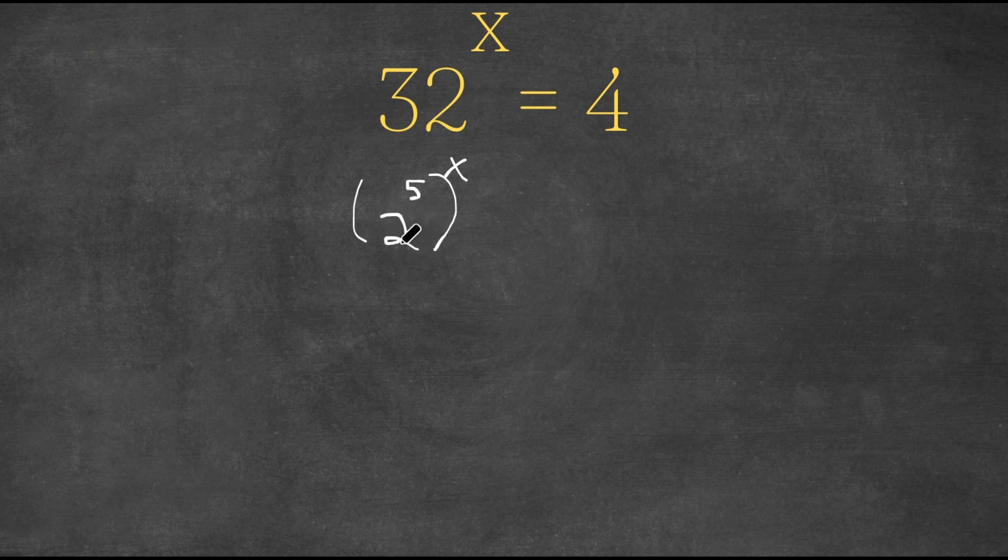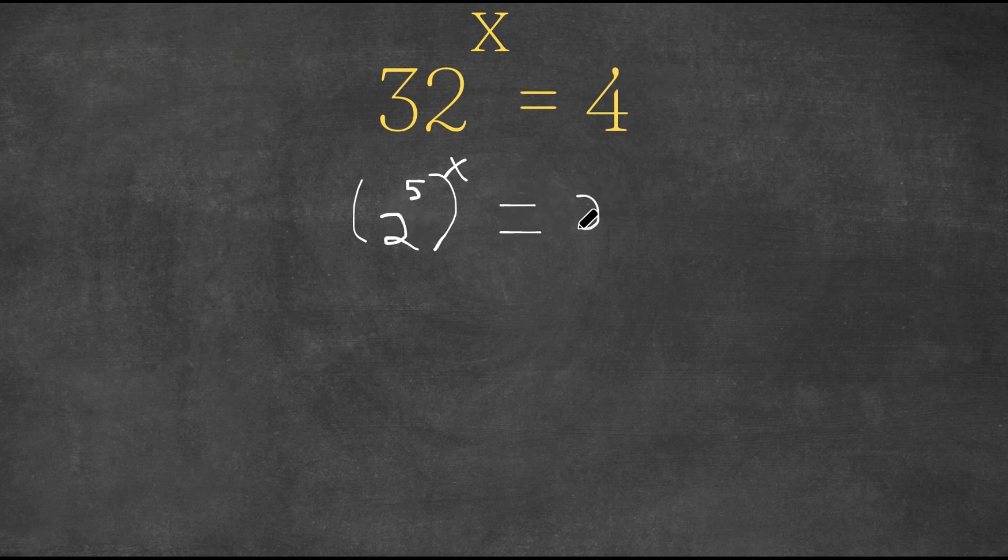That's why I'm making 32 into 2 to the power of 5 so it has a base of 2, and now I'm going to convert 4 here to 2 to the power of 2. Now these two have the same basis.